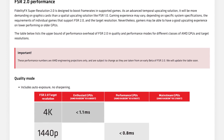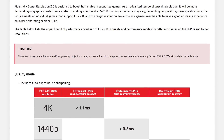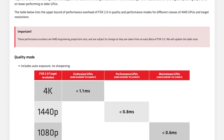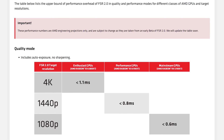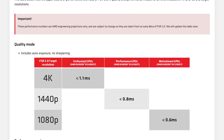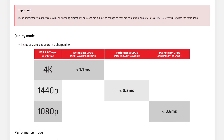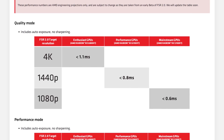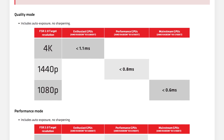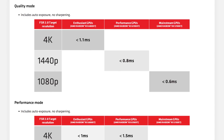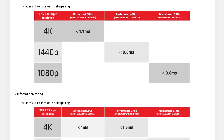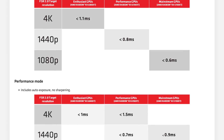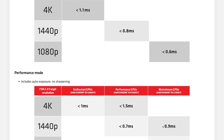As for performance expectations, AMD provided a table showing the performance cost across a range of quality settings, target resolutions, and GPU classes. Generally AMD are expecting FSR 2.0 to process in under 1ms, especially at resolutions below 4K, which is a reasonable performance cost for this sort of feature. That's similar to what we've seen from DLSS in the past, although comparisons are always difficult as DLSS performance does vary from game to game.